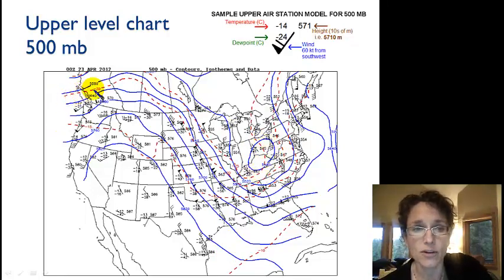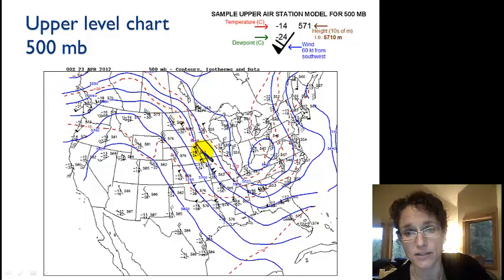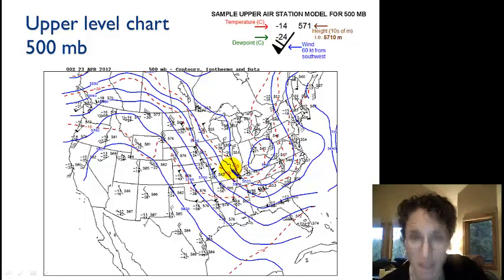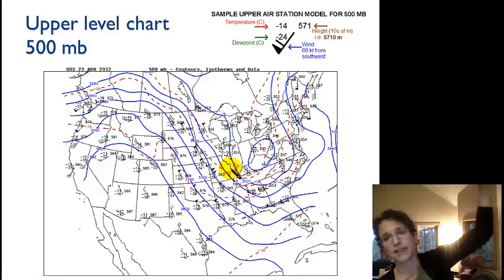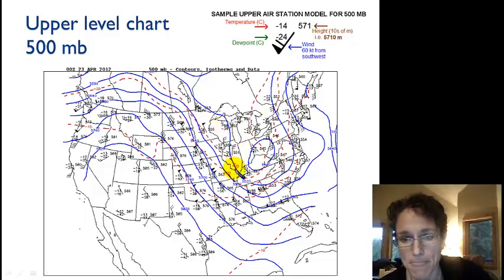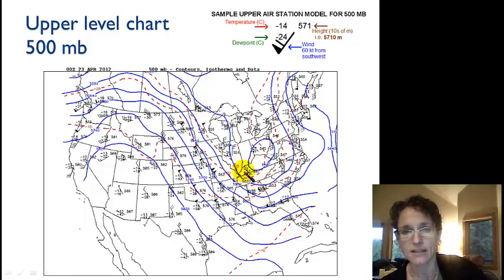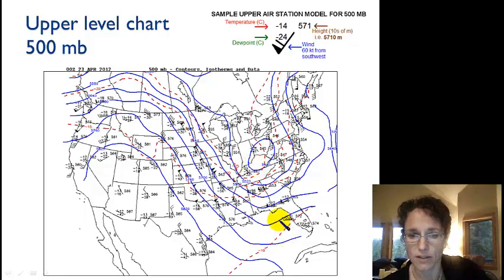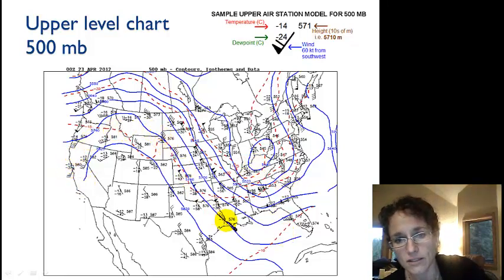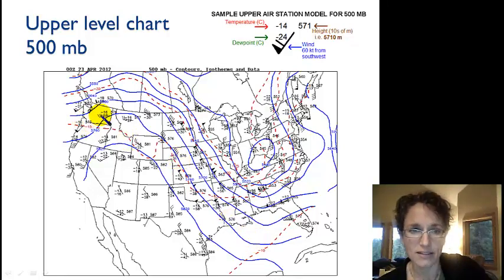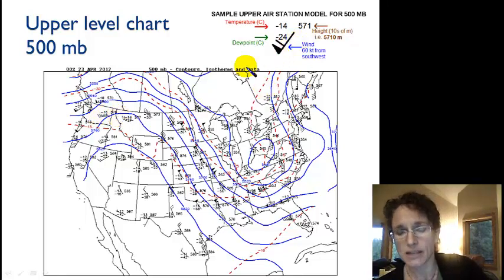These charts also show isotherms as the dotted red line — lines connecting points of equal temperature. We can see minus 25 degrees C here; this is temperature at the 500 millibar level, high in the atmosphere. In this colder area we can see the temperature increases: we're at minus 15 here, minus 10 further along. So temperature increases as that 500 millibar elevation also increases. The wind barbs tell us the direction of the upper level winds at the 500 millibar level, and the type of flags tells us the wind speed.